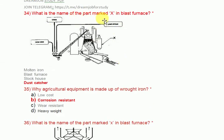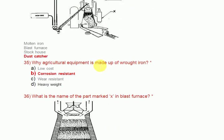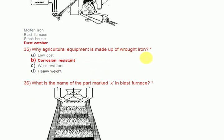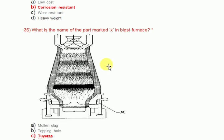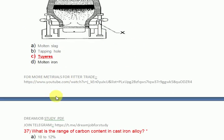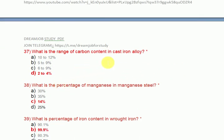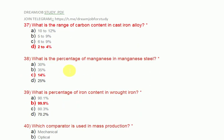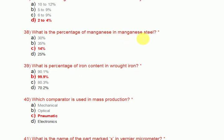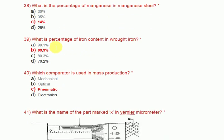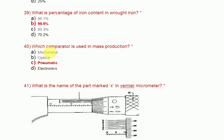What is the name of the part marked X in a blast furnace? It is a dust catcher. Why is agricultural equipment made up of wrought iron? It is corrosion resistant. What is the name of another part marked X in a blast furnace? It is a tuyere. What is the range of carbon content in cast iron? 2 to 4 percent. What is the percentage of magnesium in manganese steel? 14 percent. What is the percentage of iron content in wrought iron? 99.9 percent. Which comparator is used in mass production? A pneumatic comparator.